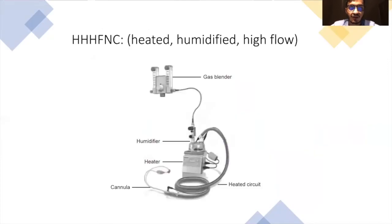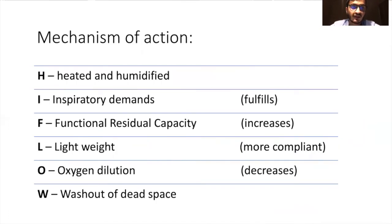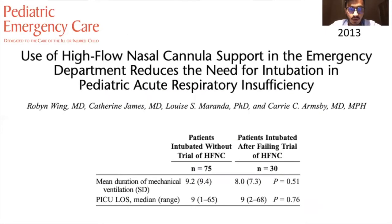The most commonly used high-flow device is HFNC — heated humidified high-flow nasal cannula. It provides heated and humidified flow of air, fulfills inspiratory demands, increases functional residual capacity, is lightweight and more compliant, decreases oxygen dilution, and causes washout of dead space. An important study published in Pediatric Emergency Care showed that use of high-flow nasal cannula support in the emergency department reduces the need for intubation in pediatric acute respiratory insufficiency and bronchiolitis.